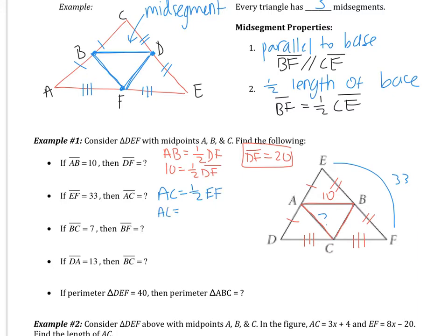So AC then will be half of 33. So AC is going to be 33 over 2, which is the same as 16.5.